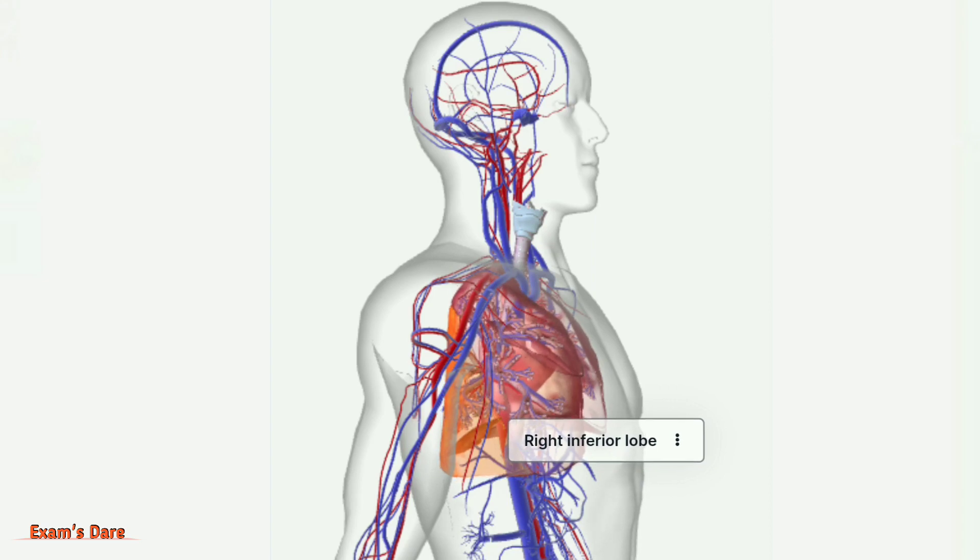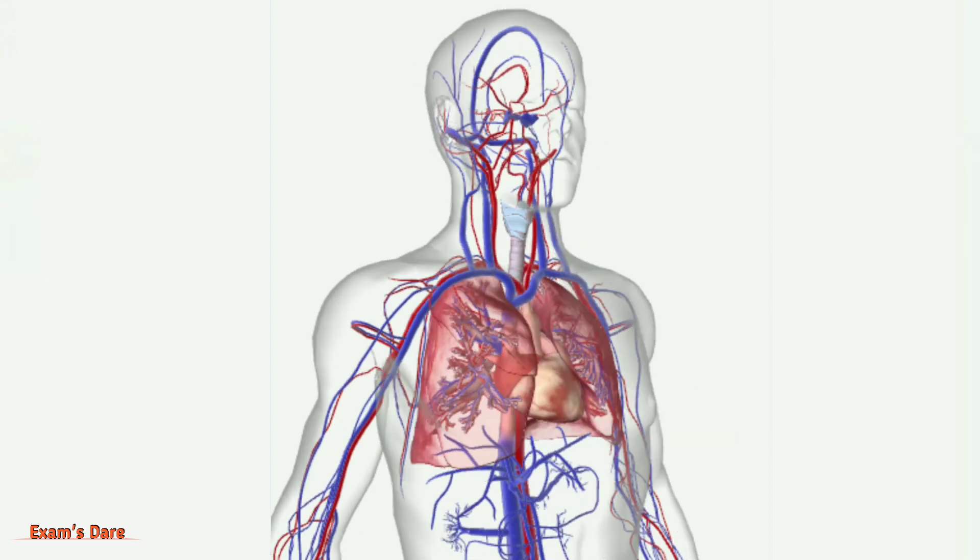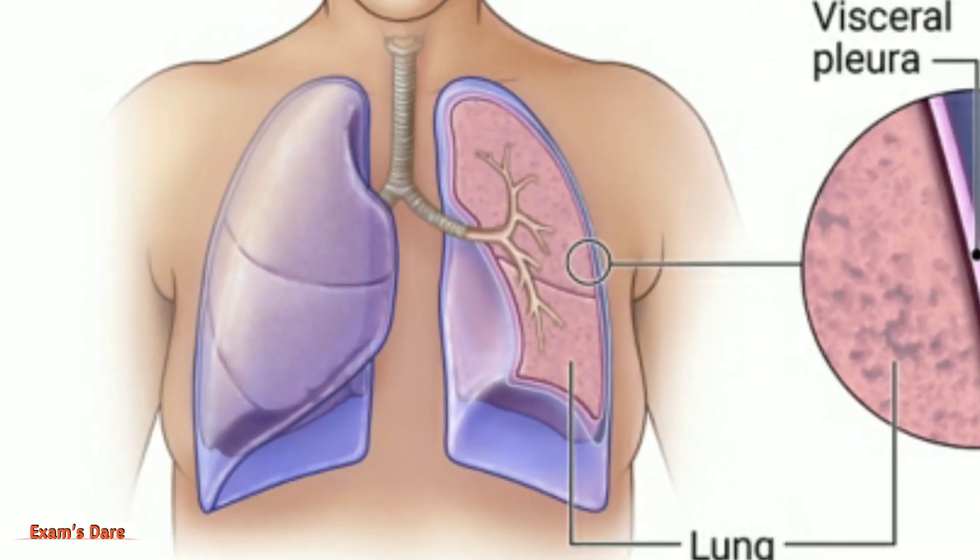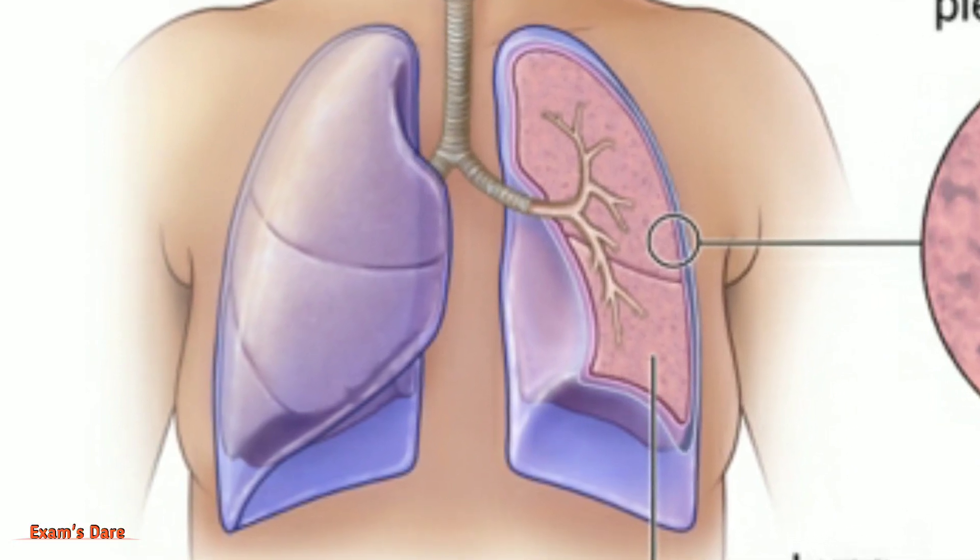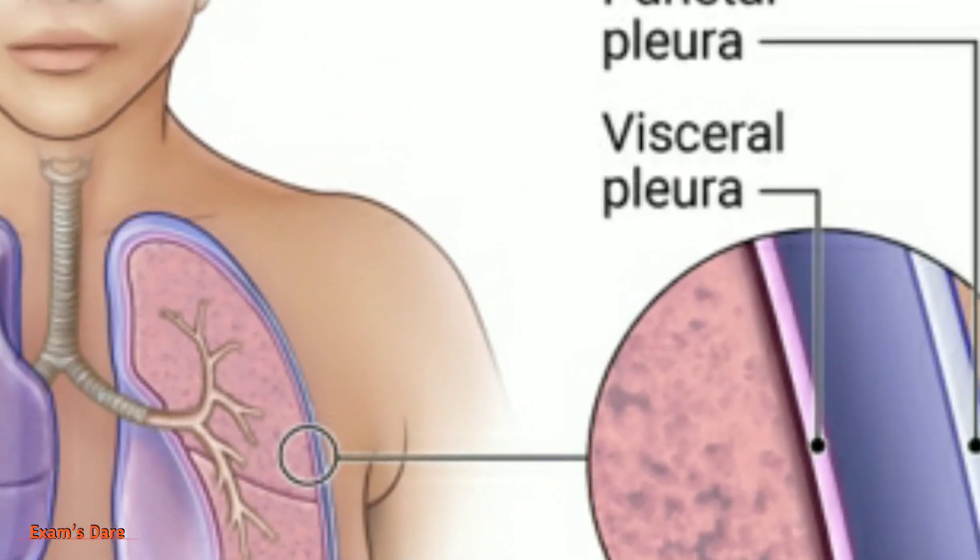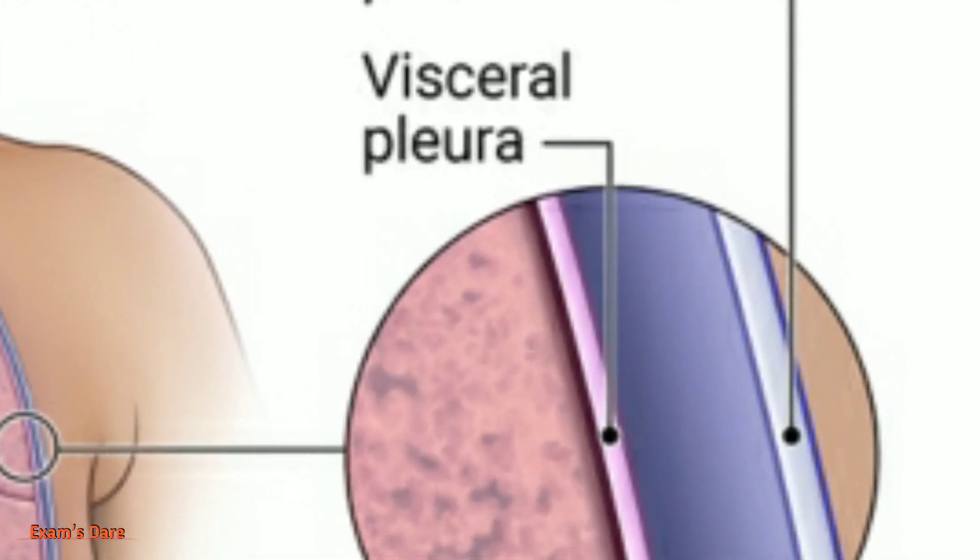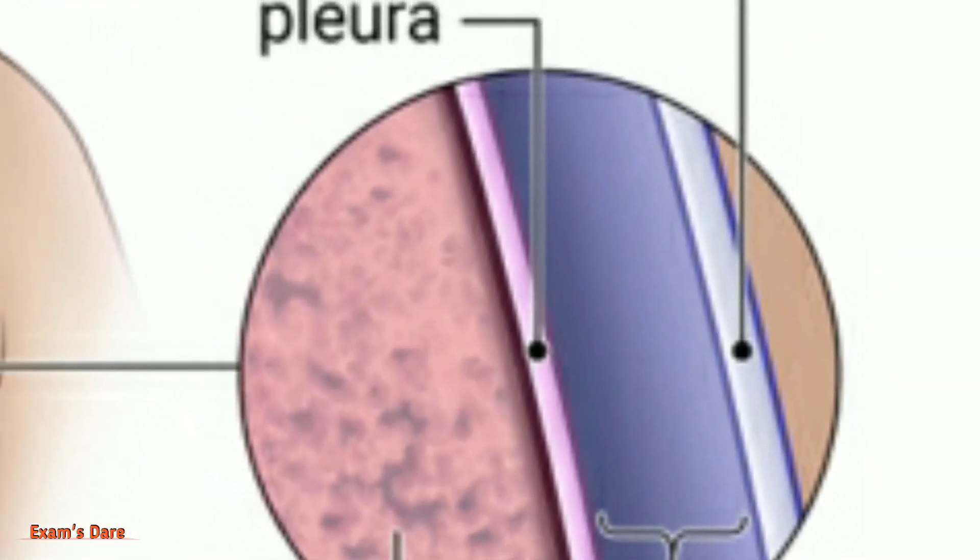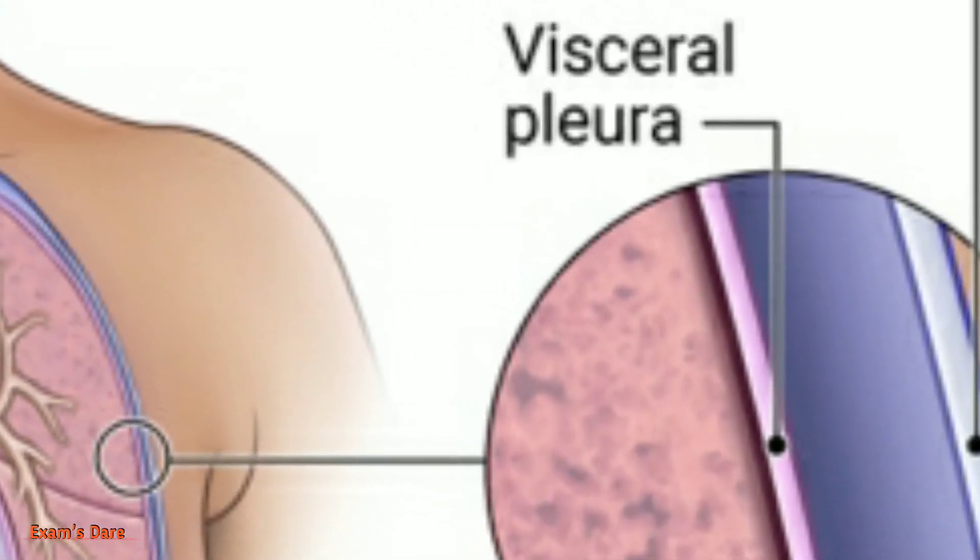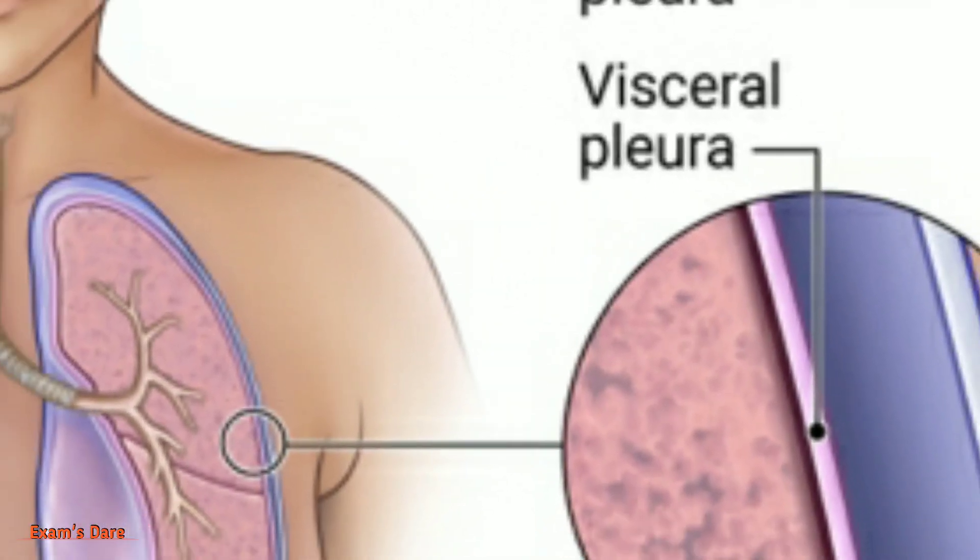The lungs are protected by the sternum, ribs, and vertebral column. The lungs are surrounded by two membranes called pleura. The outer pleura is attached to the chest wall and is known as the parietal pleura. The inner pleura is attached to the lungs and other visceral tissues and is known as the visceral pleura.